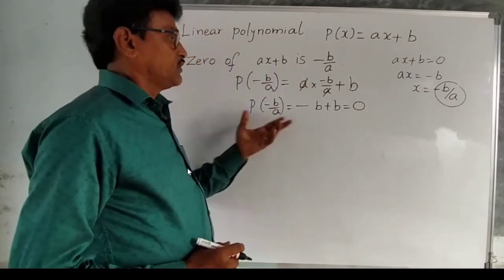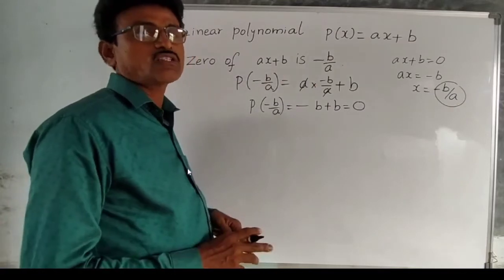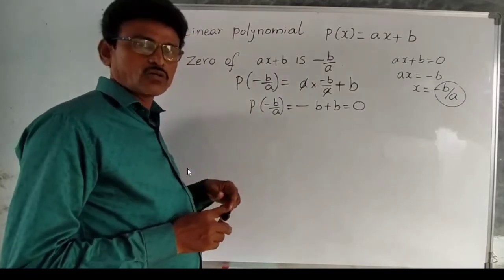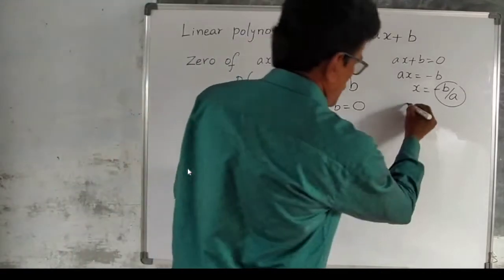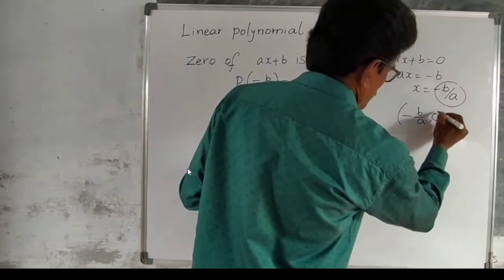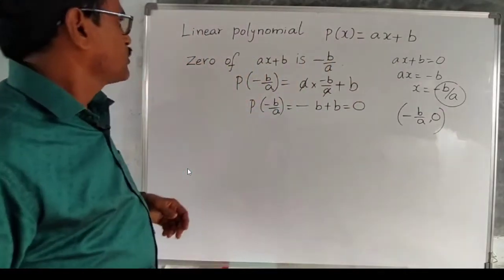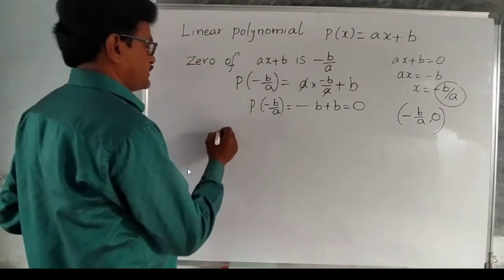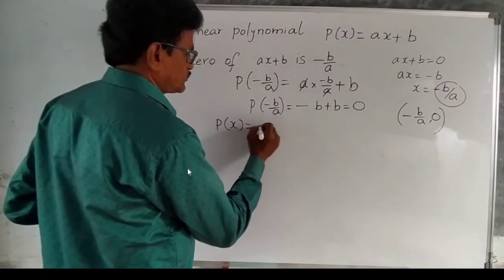If we plot the graph for a linear polynomial we will get straight lines, and that line cuts the x-axis at (minus b by a, 0). I will explain this topic in the ninth video. Let me also explain one example.